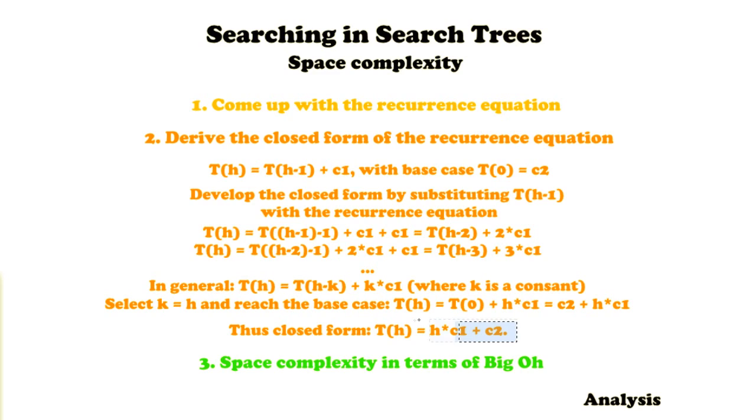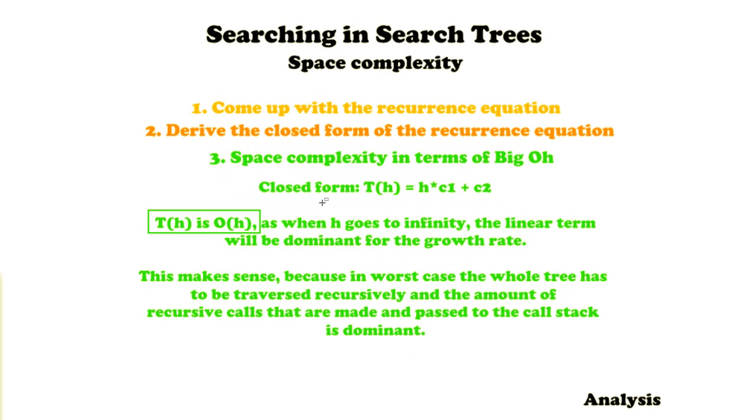So taking into account this closed form, we're going to come up with the answer for the space complexity. So here's the closed form again, and now we can conclude that T(h) is O(h), because when h goes to infinity the linear term will be dominant for the growth rate. With linear term I mean h × c1.